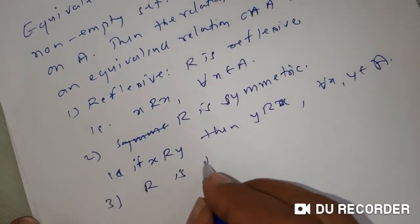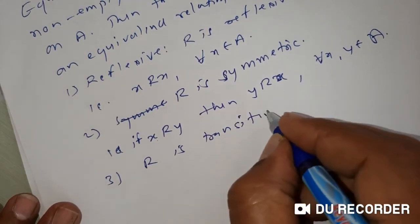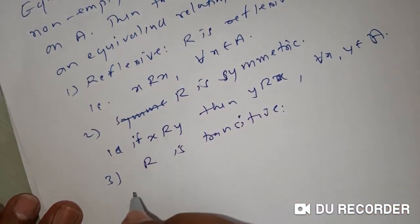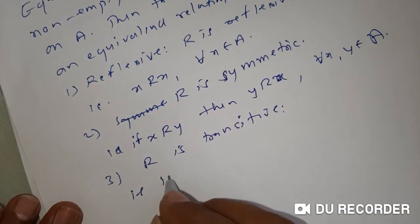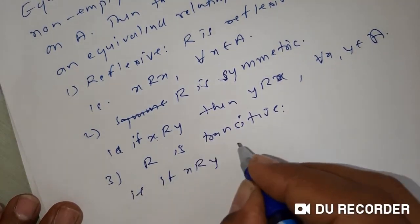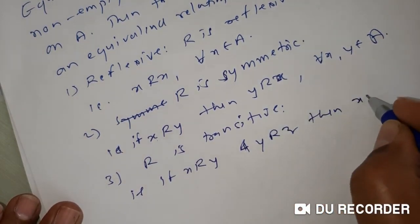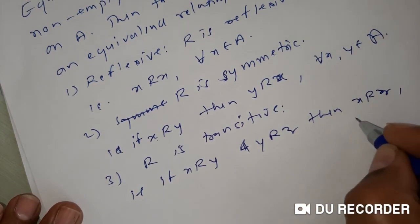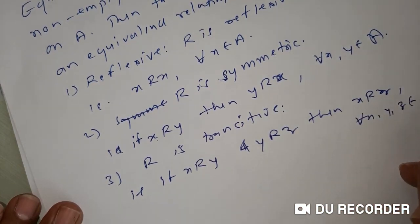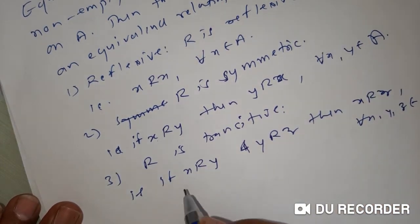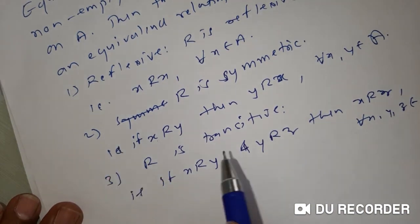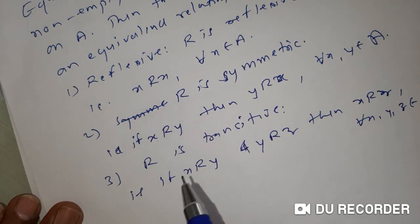Property number three: R is transitive. That is, if x is related to y and y is related to z, then x is related to z, for all x, y, z belonging to A. If this is true, we say the relation is transitive. If all three properties — reflexive, symmetric, and transitive — are satisfied, then R is called an equivalence relation on the set A.